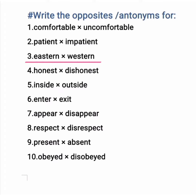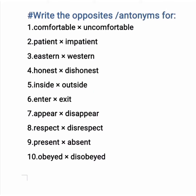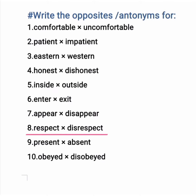The third one is eastern and the opposite of eastern is western. Honest, dishonest. Inside, outside. Enter, exit. Appear, disappear. Respect, disrespect. Present, absent and the last one is obey.